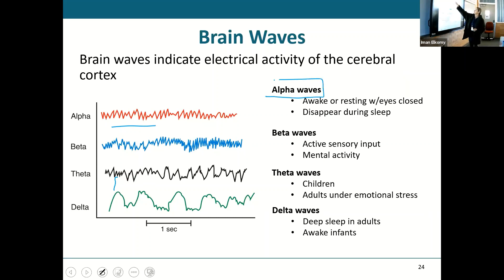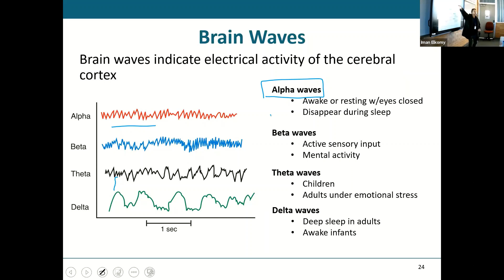When do we see alpha waves? Whenever you are awake or even resting with your eyes closed — not asleep, just awake but not really doing anything. That is your alpha waves. When you go to sleep, you should not see any alpha waves — they should not be present during sleep.